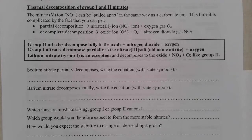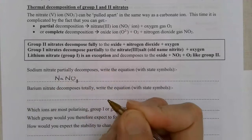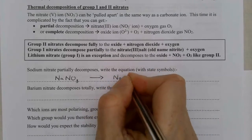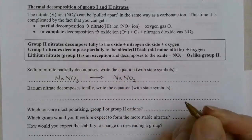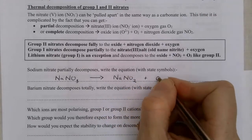Now Group 2 nitrates, because the Group 2 cation is more polarising, will all fully decompose. The Group 1 nitrates will partially decompose with the exception of lithium. Lithium will totally decompose because lithium is the smallest of the Group 1 cations and therefore the most polarising. So sodium, which is NaNO3, the nitrate 5- ion, will decompose to make NaNO2 because it's changed to the nitrate 3- ion and will release some oxygen gas.